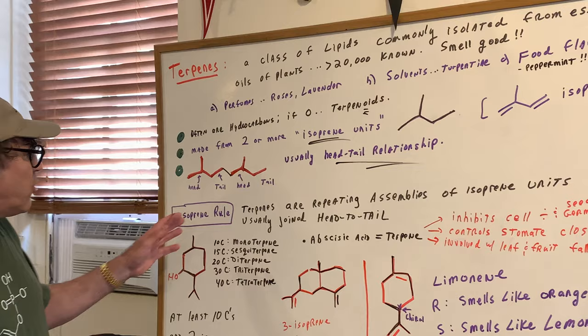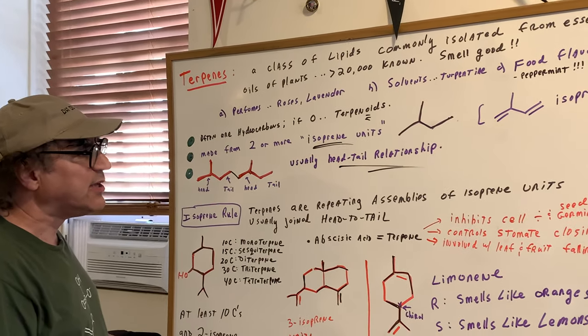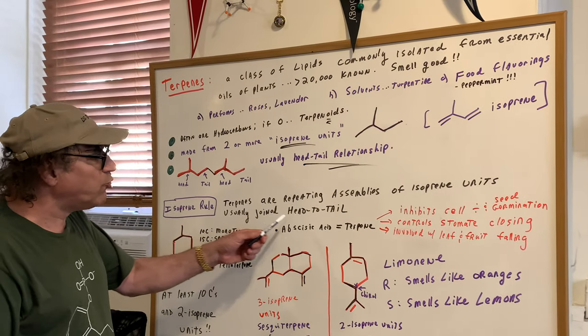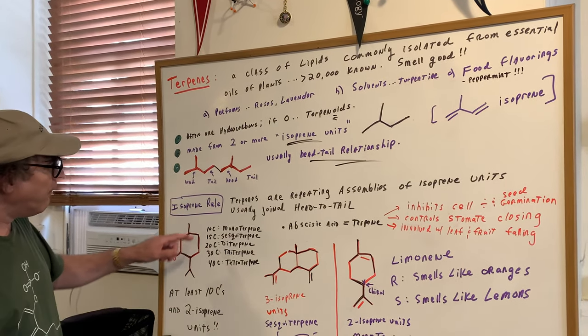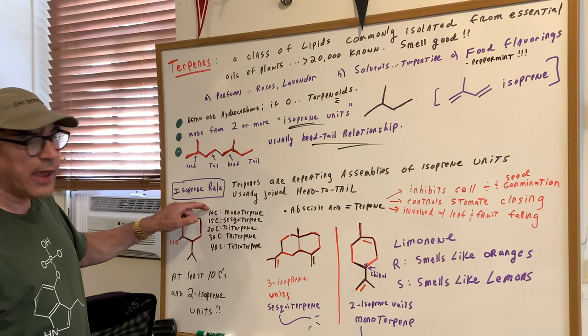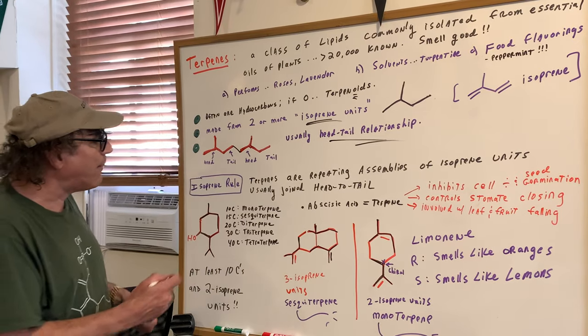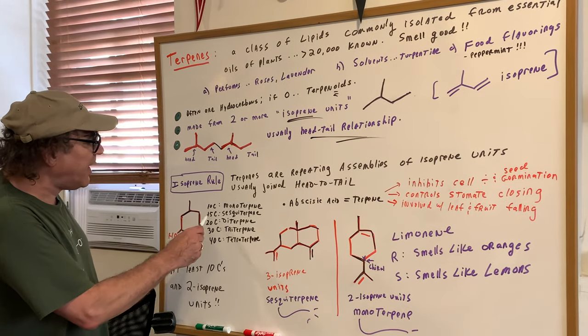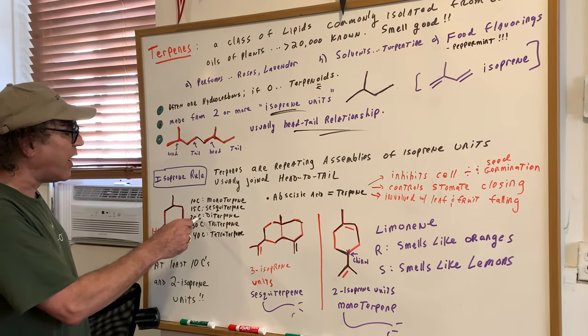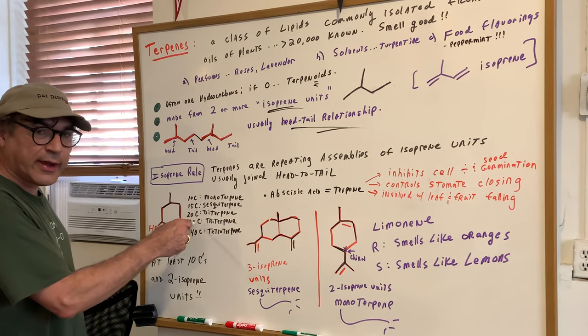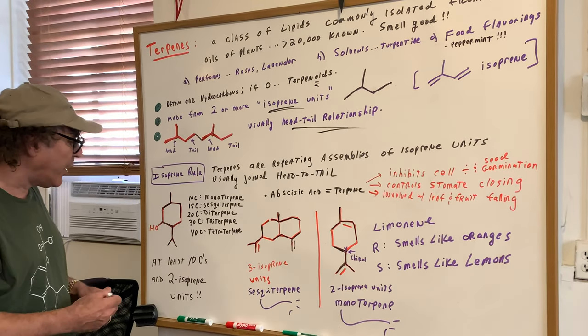Which brings me to what we call the isoprene rule. Terpenes are repeating assemblies of isoprene units. And they're usually joined in a head to tail fashion. If there's 10 carbons, and that's the minimum to be considered a terpene, you need 10 carbons, we call this a monoterpene. If there's 15, a sesquiterpene, and then it becomes really straightforward. Diterpene for 20, triterpene for 30, tetraterpene for 40.